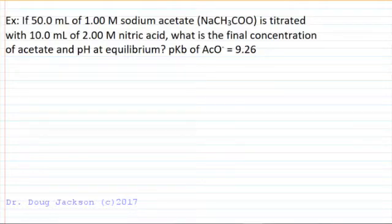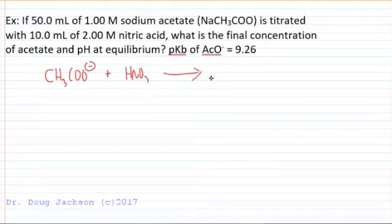We are taking 50 milliliters of one molar sodium acetate. Our weak base is sodium acetate. We don't care about the sodium - it is the conjugate acid of a strong base, so it's negligible. It's going to float off as a spectator ion. We're going to react with nitric acid and form our conjugate acid, acetic acid. Nitrate floats off never to be seen again.